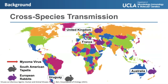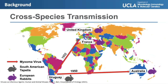Here's a map that shows how myxoma virus moved from country to country. In 1950, myxoma virus went from tapetes in Uruguay to European rabbits in Australia due to biocontrol measures. In 1952, it went from Uruguay to France. And in 1953, it went from mainland Europe to the UK. In every case, more than 90% of the European rabbit population in each country died.